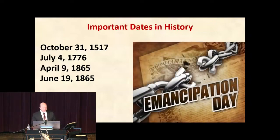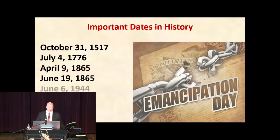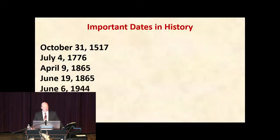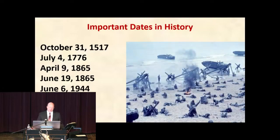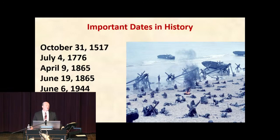How about this date, as we think of American history: June 6th, 1944? That was D-Day — the great landing on Normandy Beach where the United States and British forces joined together, and it marked the turning point of World War II.